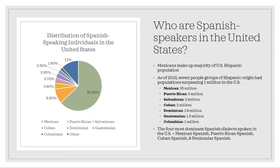So who are Spanish speakers in the United States? Mexicans make up the majority of the Hispanic population in the US. As of 2015, seven people groups of Hispanic origin had populations of over one million in the US, with Mexicans at 35 million making up 63.3% of the US Hispanic population, then Puerto Ricans at 5 million making up 9.5%, and then Salvadorans, Cubans, Dominicans, Guatemalans, and Colombians. The most dominant Spanish dialects spoken in the US are Mexican Spanish, Puerto Rican Spanish, Cuban Spanish, and Peninsular Spanish, also known as the Spanish of Spain or European Spanish.